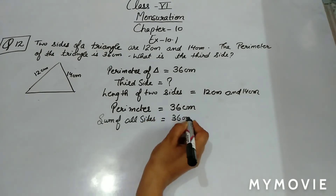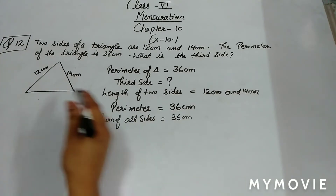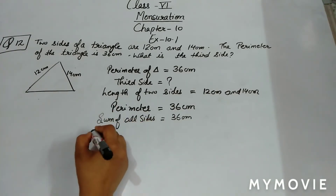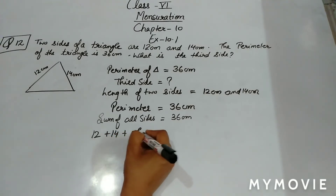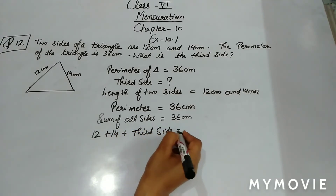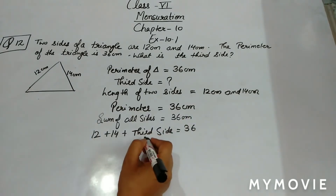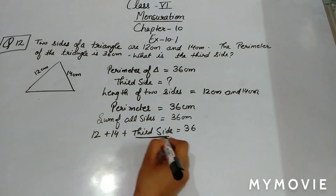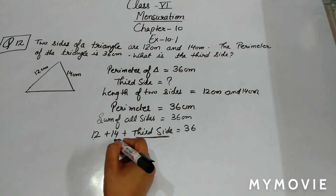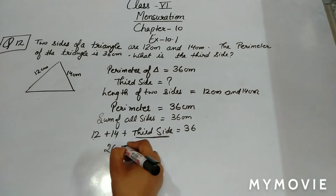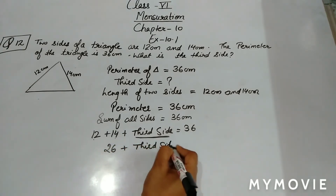Since the third side is not given, we write it as it is: 12 plus 14 plus third side equals 36. First, we add 12 plus 14, which gives us 26. So we get: 26 plus third side equals 36.